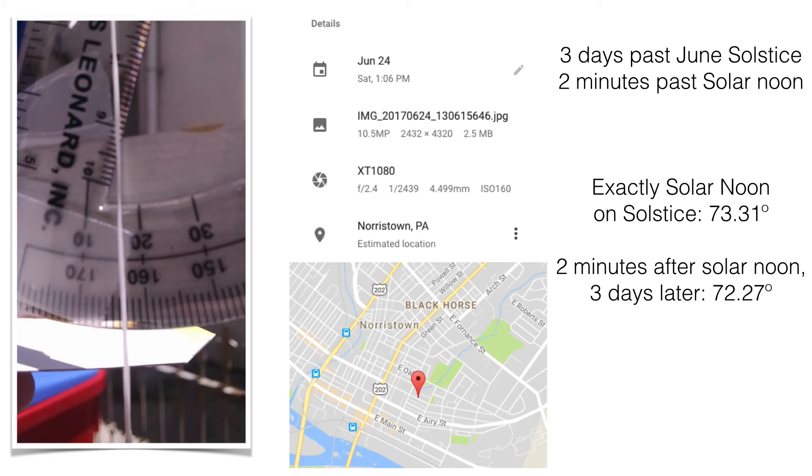So I ran the numbers, and it turns out that if you compare what would have happened exactly on solar noon versus two minutes after solar noon a couple days later, the difference is about four hundredths of a degree. So not a huge difference. So I'm going to just go with this photo.